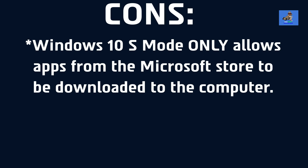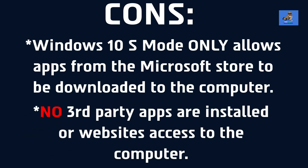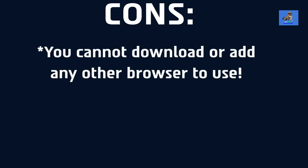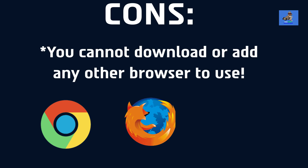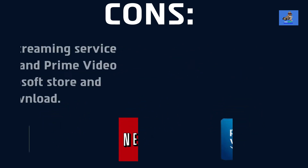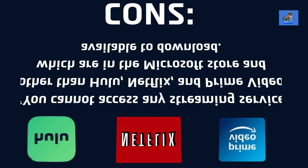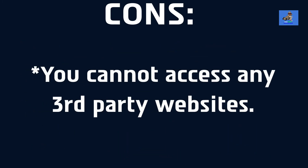The cons: Windows 10 in S-mode only allows apps from the Microsoft Store to be downloaded. No third-party apps or sites can be accessed or installed. While in S-mode, you cannot download any other browser — Chrome, Firefox, or Opera. You cannot access streaming services other than Hulu, Netflix, and Prime Video, which are in the Microsoft Store. You cannot access any third-party websites like Putlocker, Showbox, Vayus, or Watch Series.